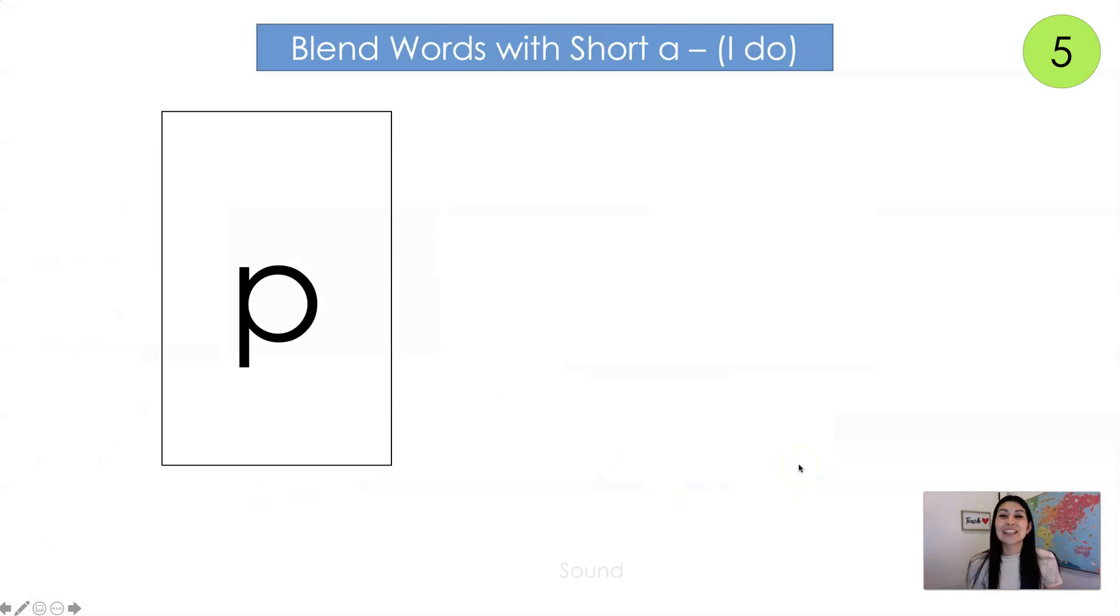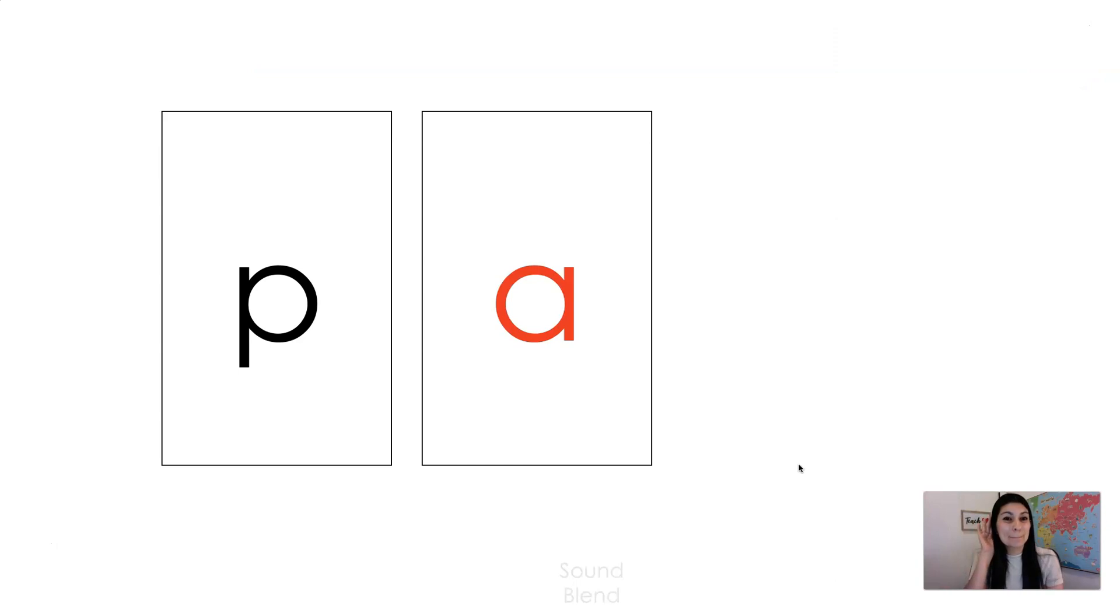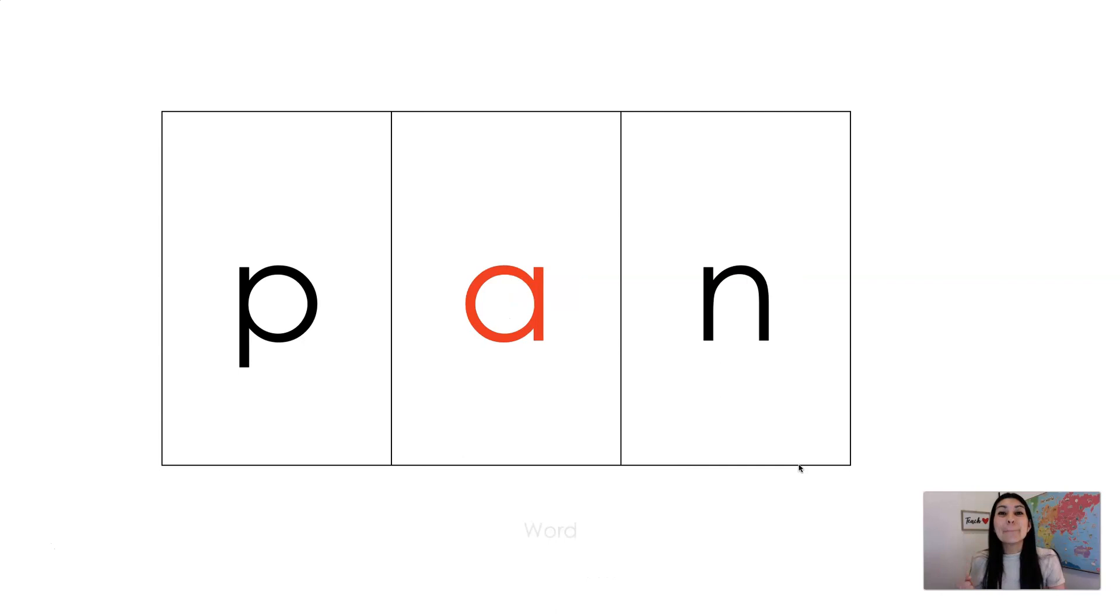Okay, so we're talking about the short A sound. Can you say it with me? Ah, good. Let's go ahead and read these words sound by sound and then we'll blend the whole word together. Ready? Sound. Ah, n. Word. Pan. Good job.